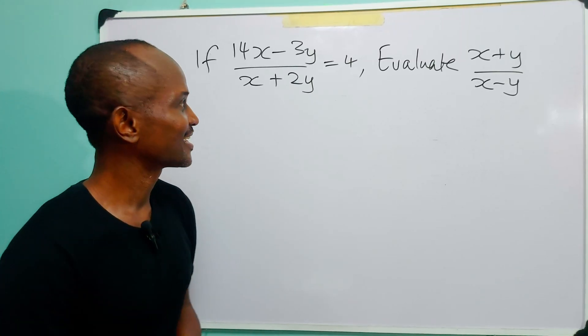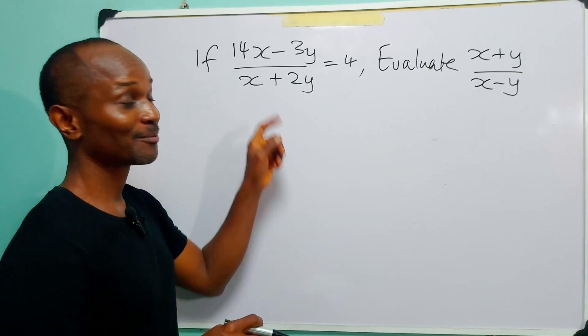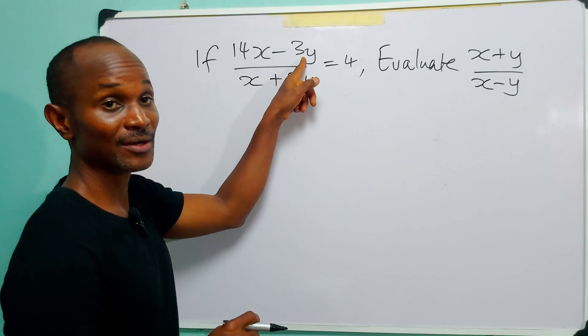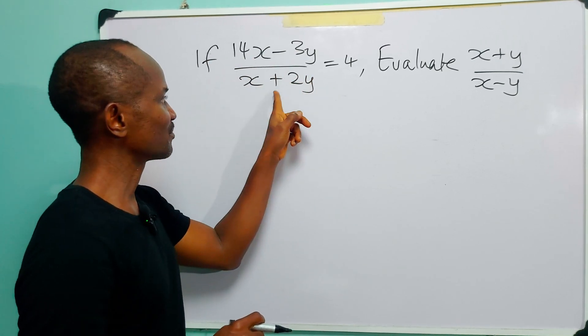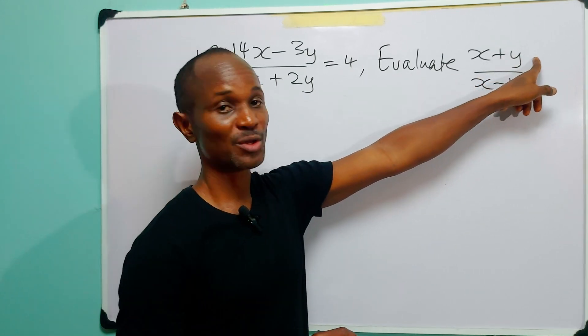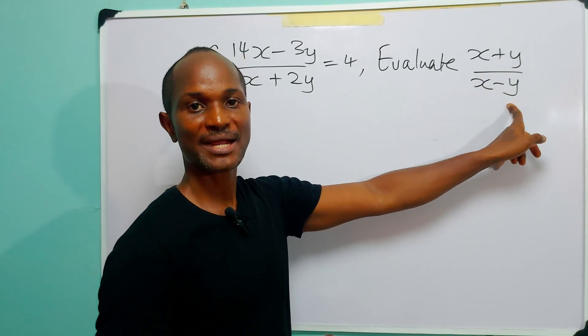Hello and welcome. Our task for today is to solve this rather common SAT question, which is: if (14x - 3y)/(x + 2y) = 4, then evaluate (x + y)/(x - y).